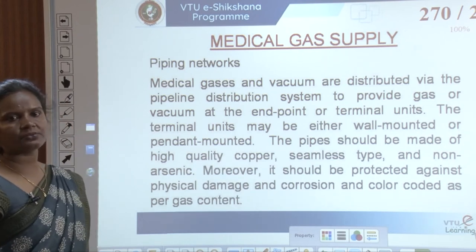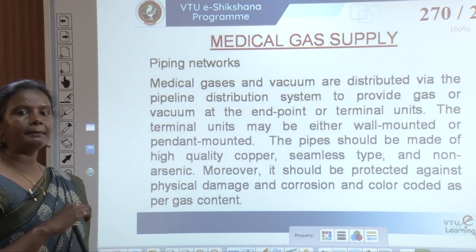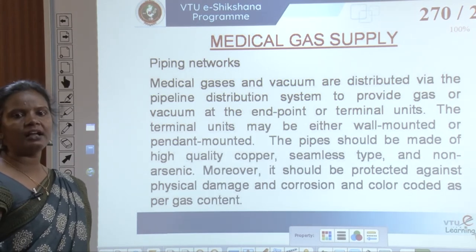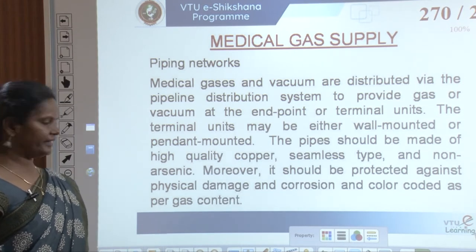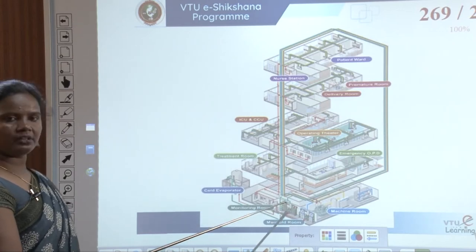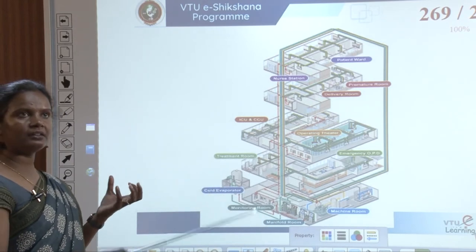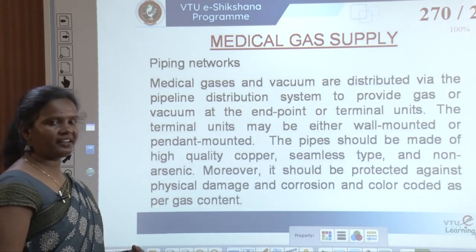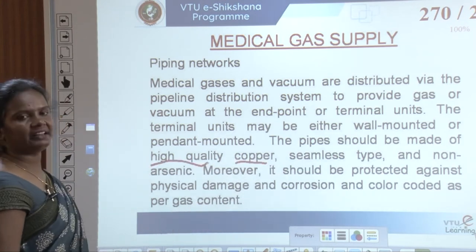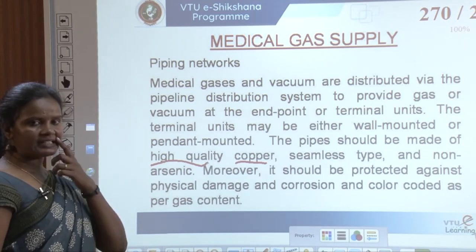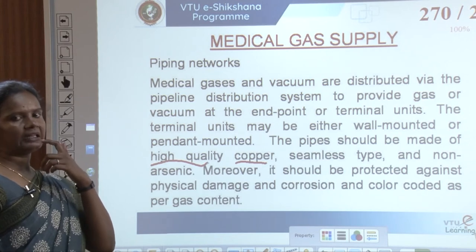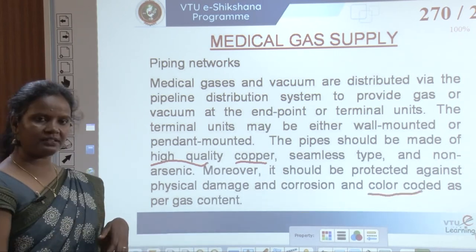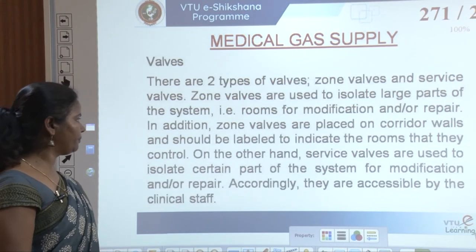Medical gases and vacuum are distributed via pipeline systems to terminal units. Terminal units may be wall-mounted or pendant-mounted (hung from the ceiling or inside the false ceiling). Pipes must be made of high-quality seamless, non-arsenic copper, protected against physical damage and corrosion, and color-coded as per gas content.